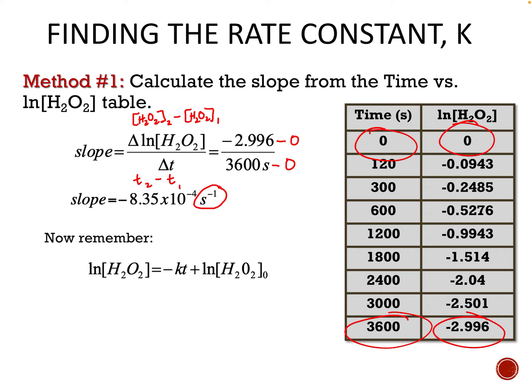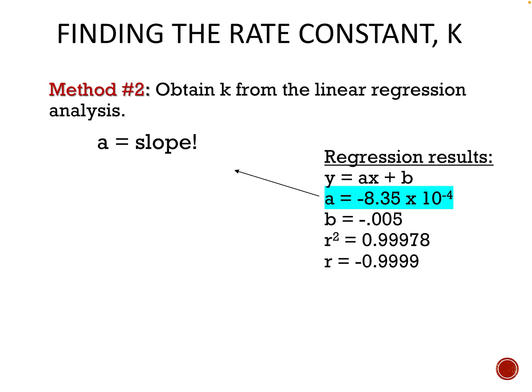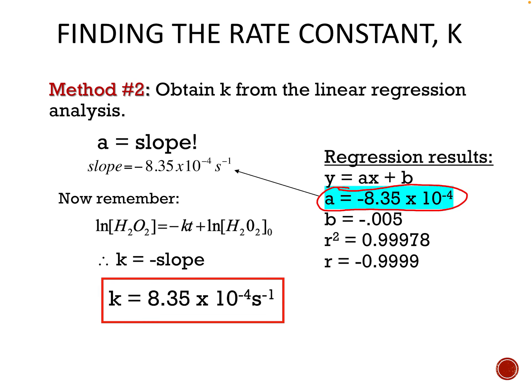Since slope equals negative K, we take the negative of our negative slope to get K = 8.35 × 10⁻⁴ s⁻¹. Another way is to use the linear regression — the slope coefficient A from the regression output is your slope, and since slope equals negative K for zero and first order, you take the negative of that. For second order, slope equals positive K. If you make the equation of the line in Google Sheets, it will give you y = mx + b directly, so you just need to remember whether slope equals negative K or positive K.